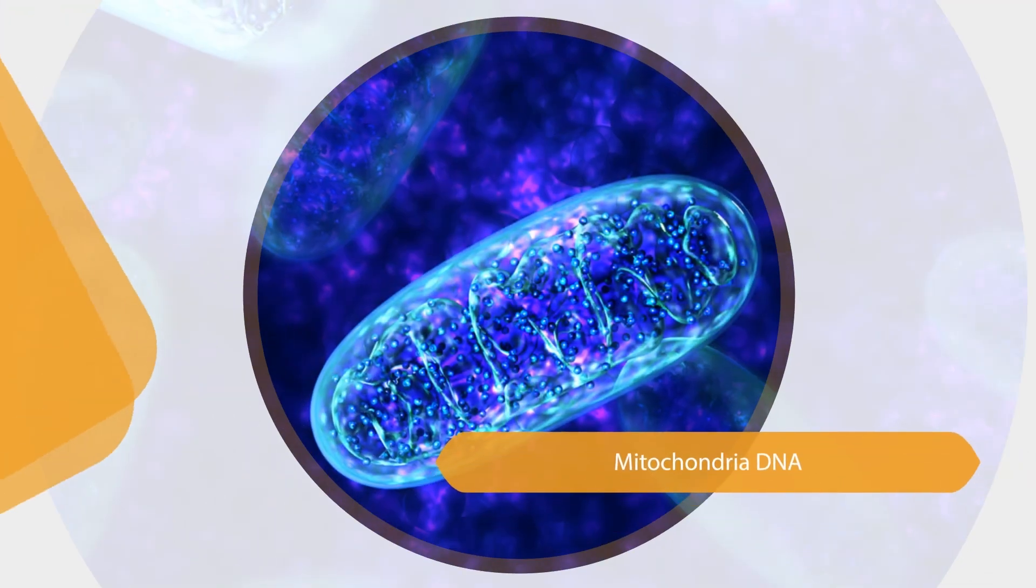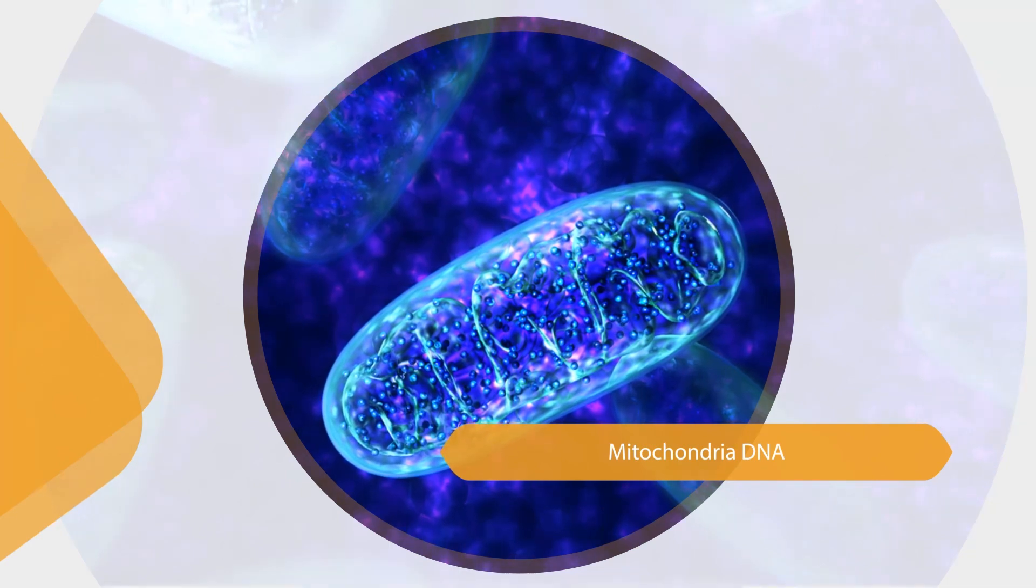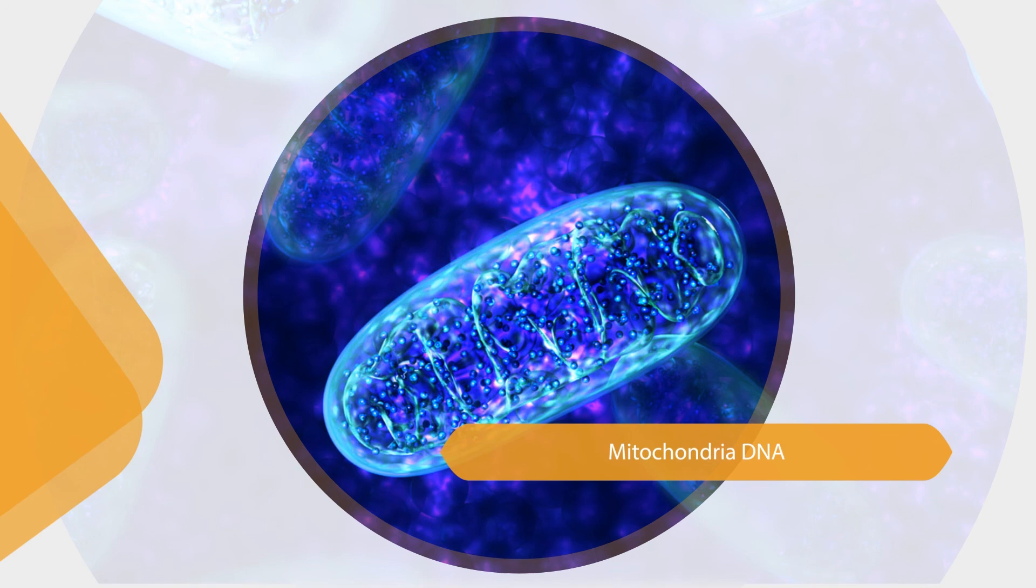Mitochondria, or energy producing structures in cells, contain a small amount of DNA. Unlike DNA in the cell nucleus, which is inherited from both parents, mitochondrial DNA is inherited only from the mother. Mistakes in copying mitochondrial DNA, also known as mutations, is the cause of a small number of genetic disorders.